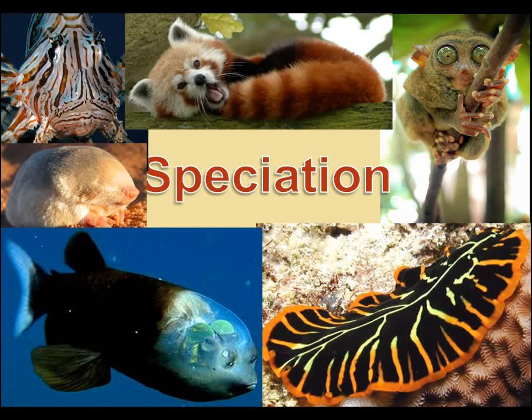Let's talk about speciation — how one population of organisms can become two different populations of organisms, which eventually leads to two new species of organisms.